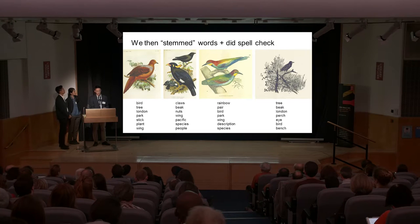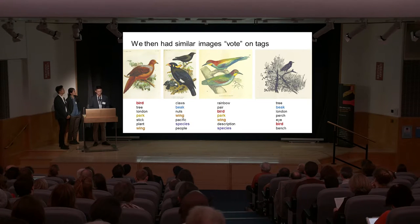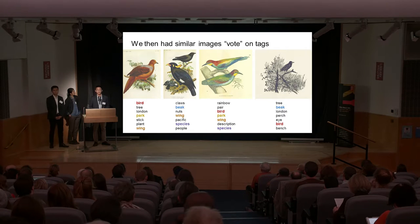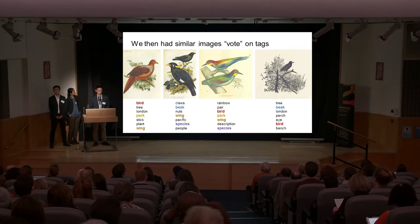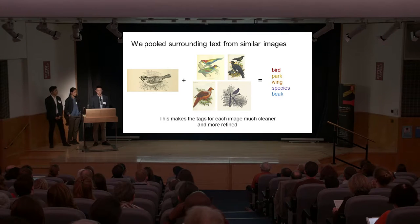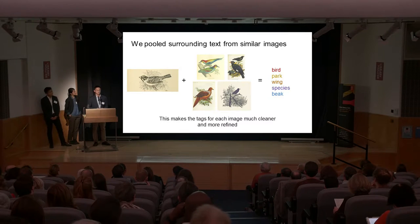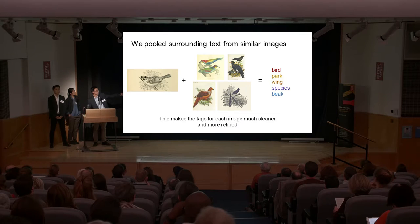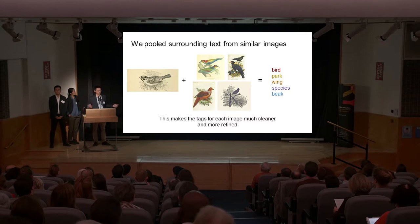Now with a cleaned-up set, we can have them vote. Things like 'bird,' 'wing,' 'beak' appear multiple times across similar images, so we take those as the tags. Using all of those similar images, we get a much better set of tags.